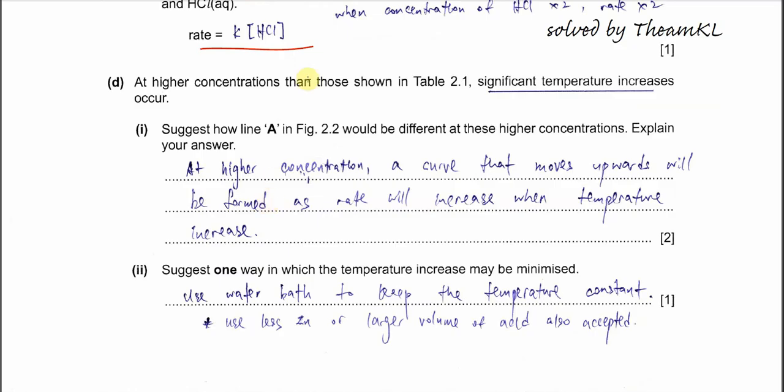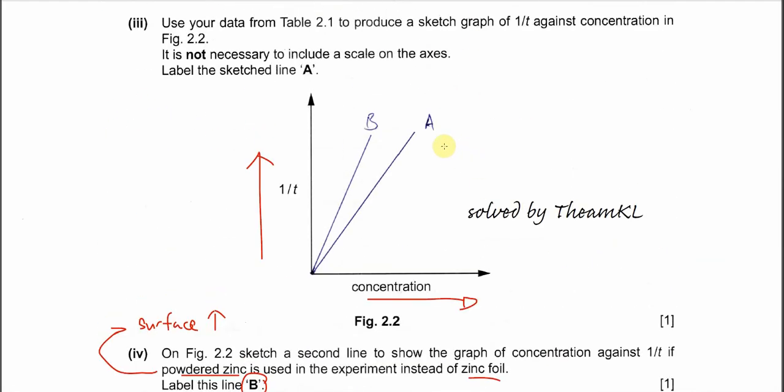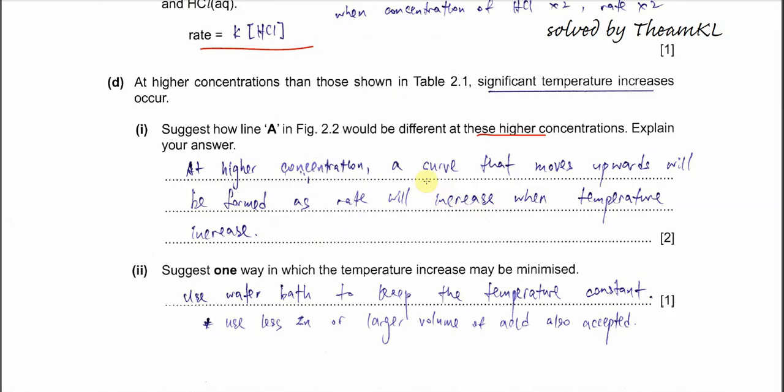Part D. At higher concentration than those shown in table 2.1 - more than 6 - significant temperature increases occur. Part 1: Suggest how line A in figure 2.2 would be different at those higher concentrations. It's a straight line, but if we use higher concentration, it won't be a straight line because the temperature actually increases - it's highly exothermic. Higher temperature will also increase the rate. The rate won't be linear, it will increase exponentially. At higher concentration, after 6 mol per dm³, you might get a curve which moves upwards. The reason is because the temperature increase will eventually increase the rate exponentially.